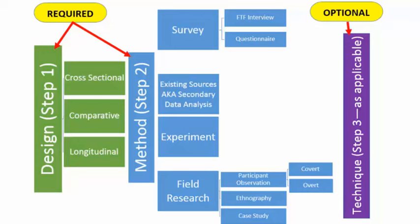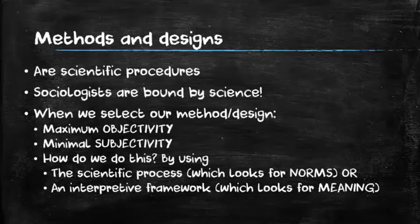In this lecture, we're going to talk about the method, which comes after you've selected your design. You'll choose from four major research methods: surveys, existing sources research (also called secondary data analysis), experiments, or field research. Methods and designs are scientific procedures. We are always bound by science, and we try to maximize objectivity and minimize subjectivity by following the scientific process or an interpretive framework.